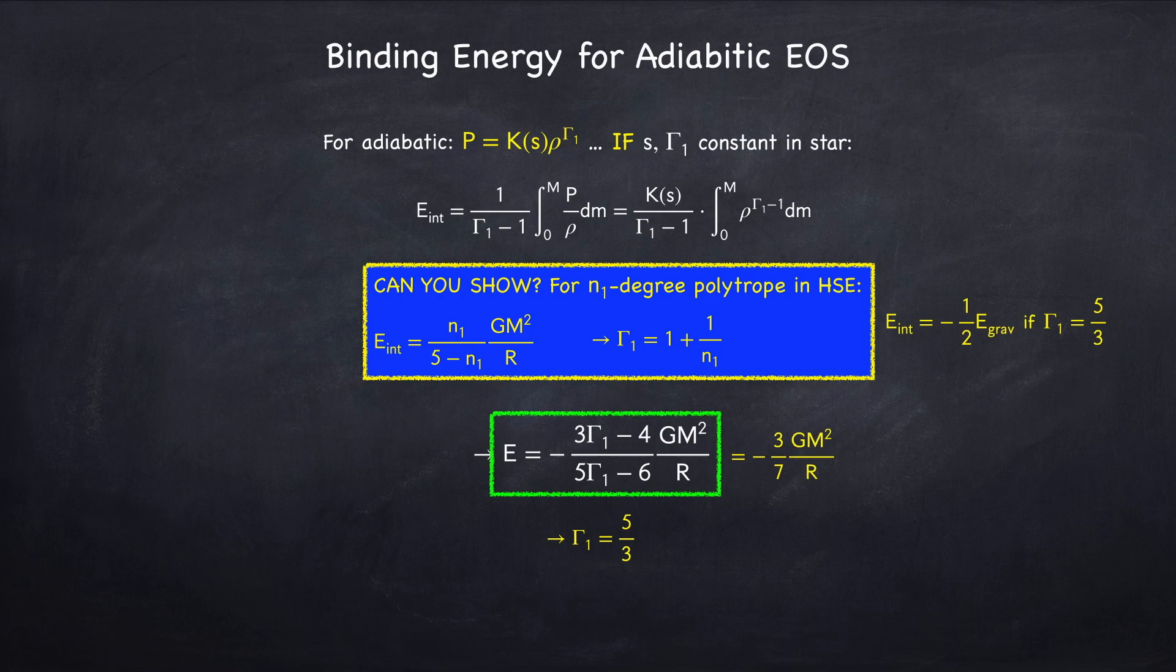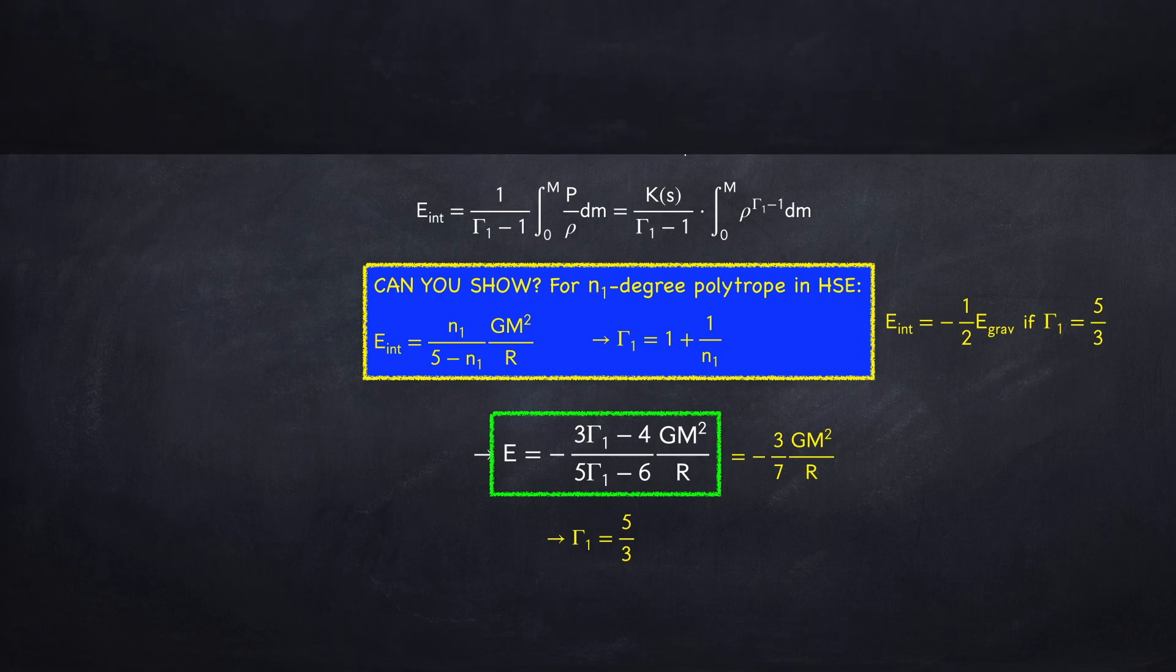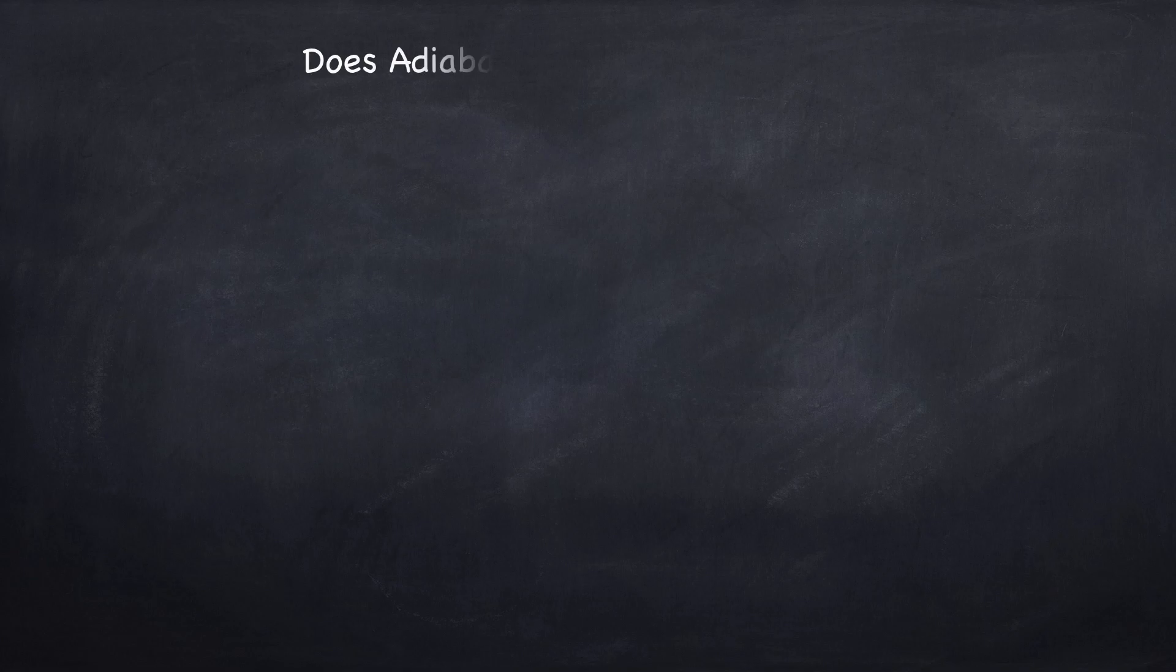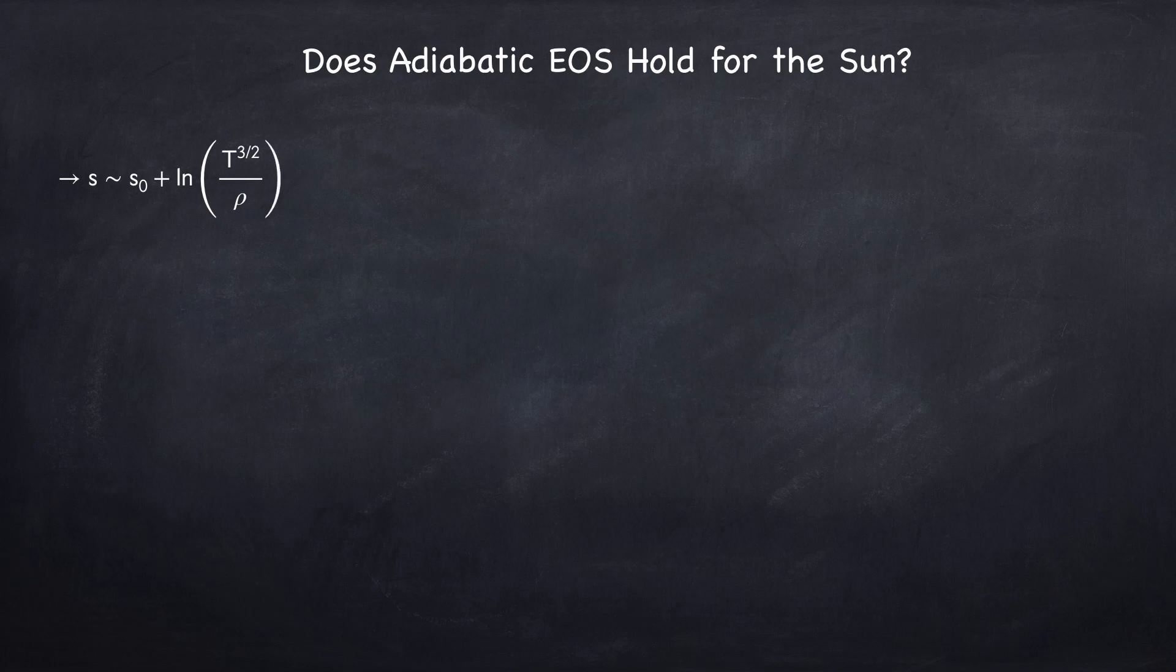So we have the binding energy for adiabatic processes in the gas dominated star, but does the adiabatic assumption hold for the sun? Well, recall what we derived the entropy to be. For this adiabatic result, we needed k of s to be constant, which means we need t to the 3 halves divided by rho to be constant throughout the star. Well, actually, this doesn't really hold for the sun.